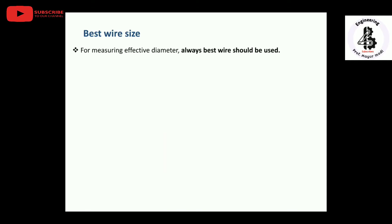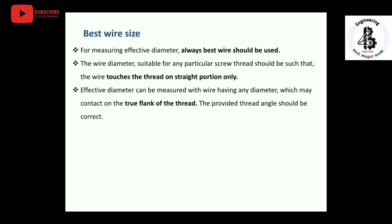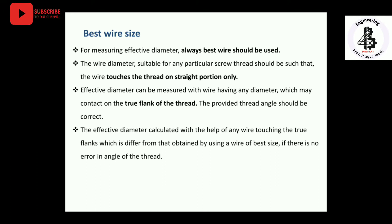For measuring the effective diameter, the best wire should be selected. The diameter suitable for any particular screw thread should be such that the wire touches the thread onto the straight portion only. The effective diameter can be measured with a wire having any diameter which contacts onto the true flank of the threads, provided the thread angle is correct.